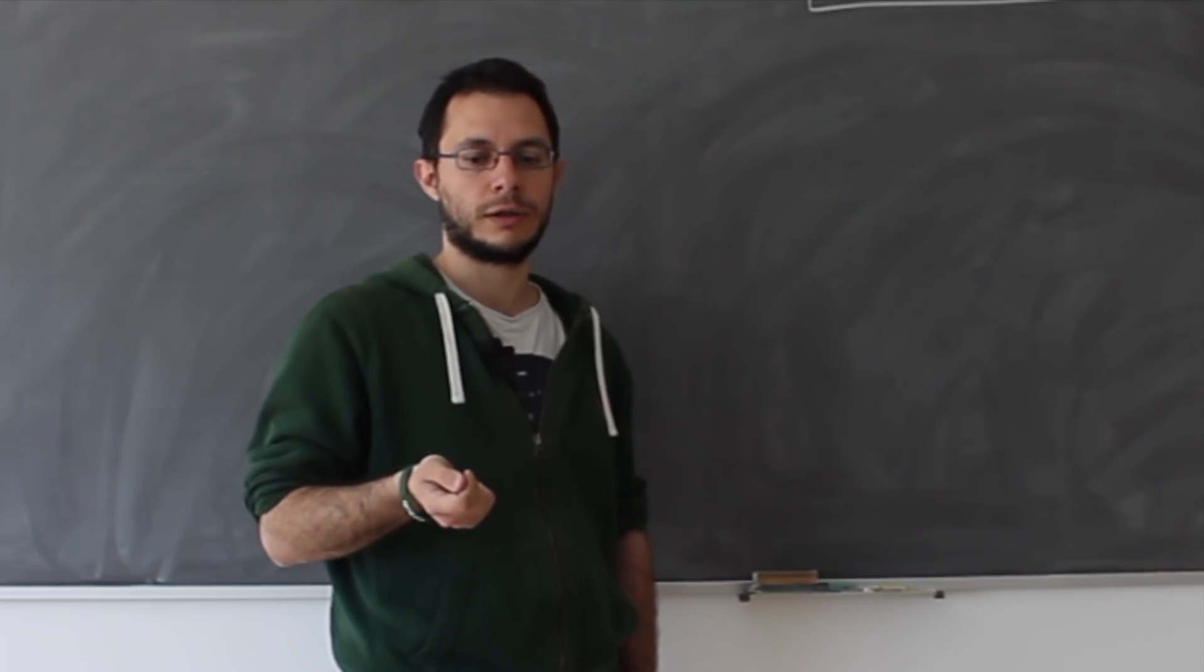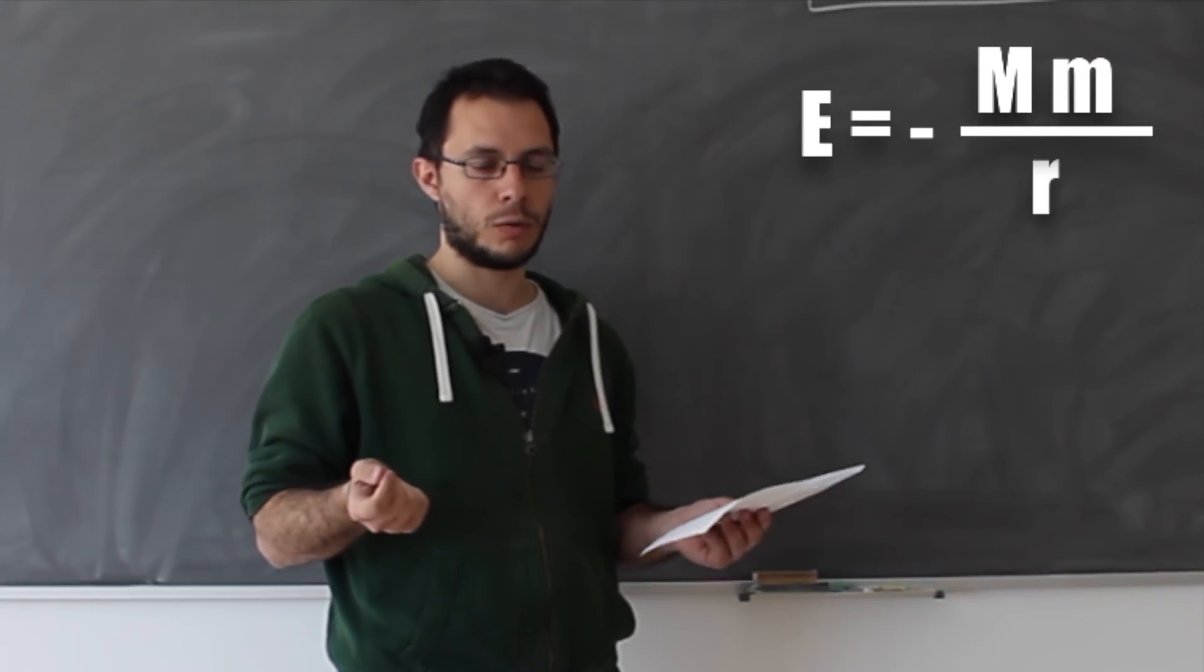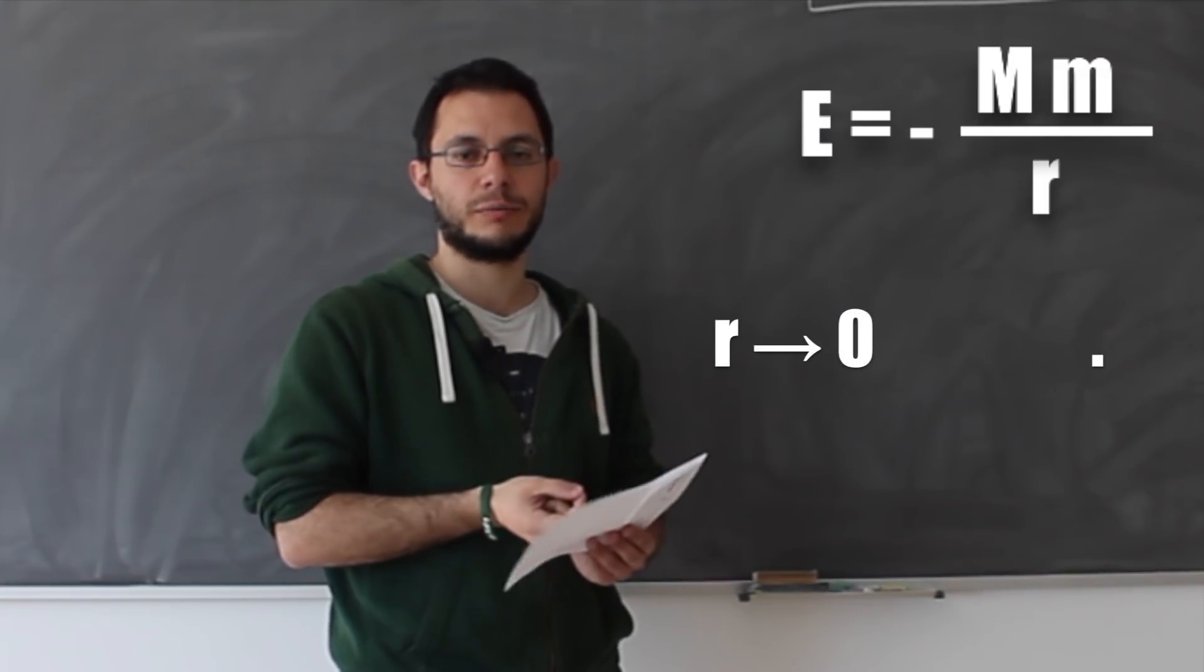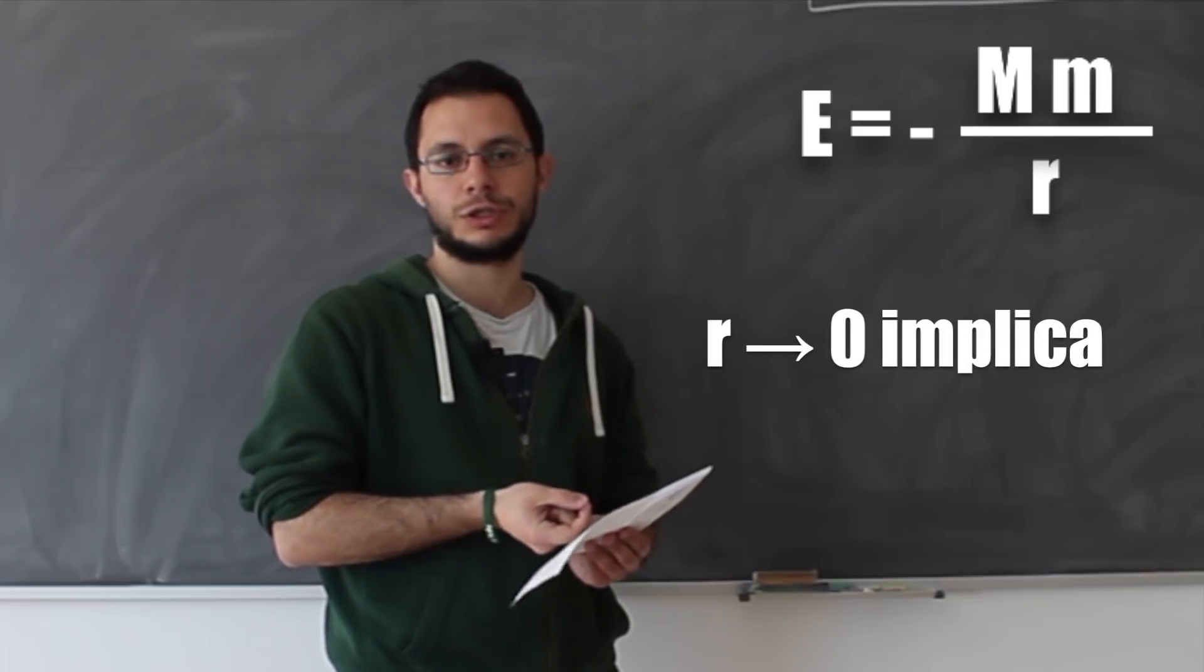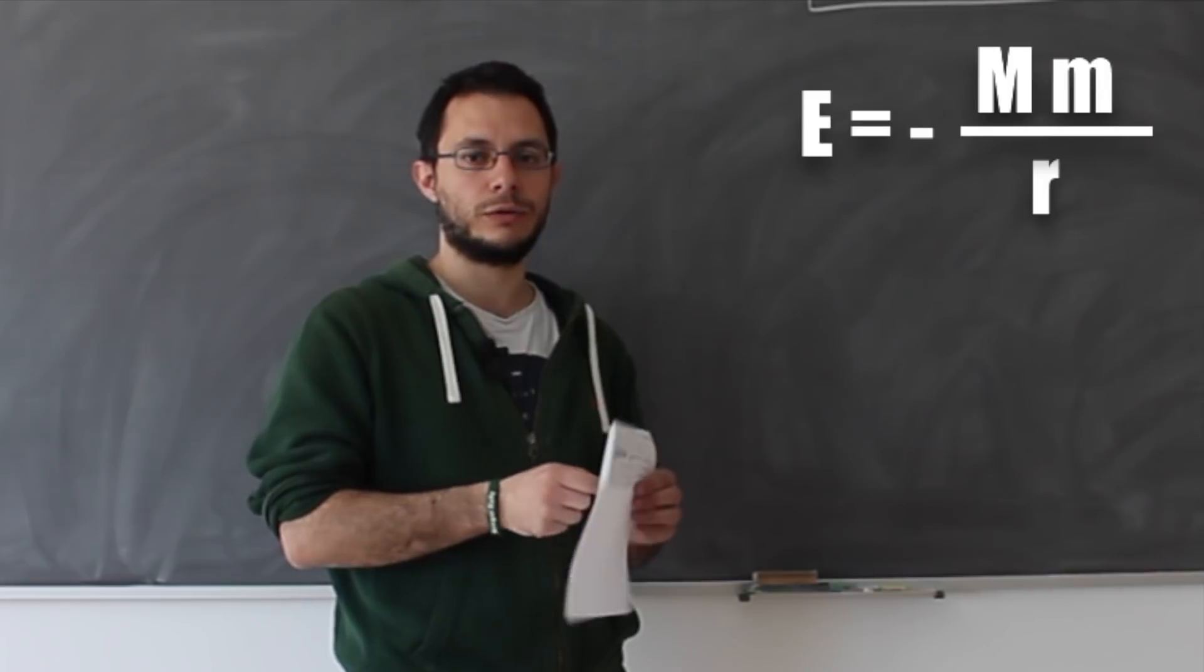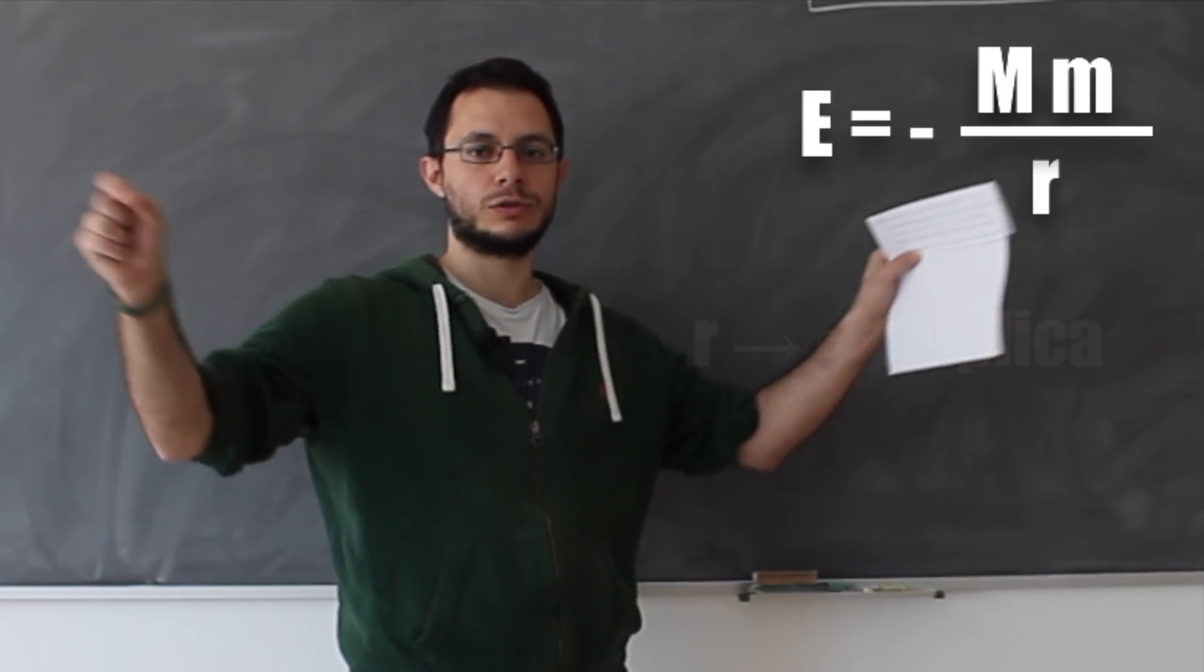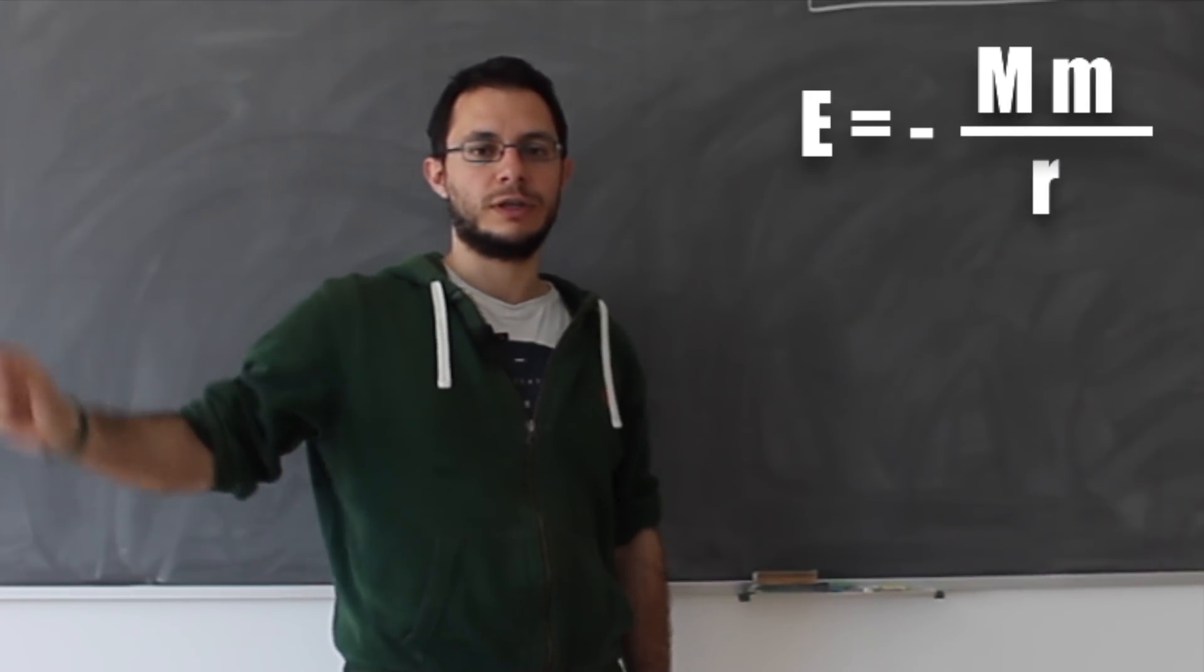To think of this, you can think of two point-like particles. When these two particles are exactly at the same point, the potential energy of the system would be minus infinity. On the other hand, while you tear them apart, the energy is slowly increasing and it goes to zero when you put these two particles at infinity.